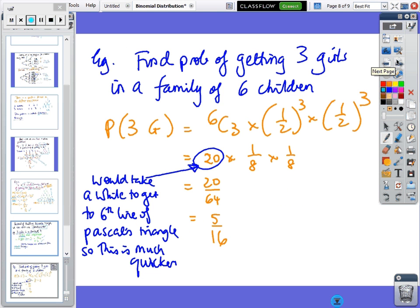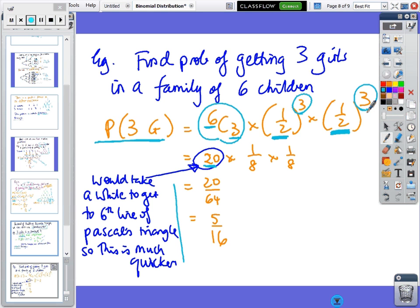Find the probability of getting three girls in a family of six children. The probability of three girls: you've got six children and need three girls, so it's ⁶C₃, which gives you 20. There are 20 ways of getting three girls in six children. Each girl has probability 1/2 and you need three, each boy has probability 1/2 and you need three. P(3 girls) = 20 × (1/2)³ × (1/2)³ = 5/16.